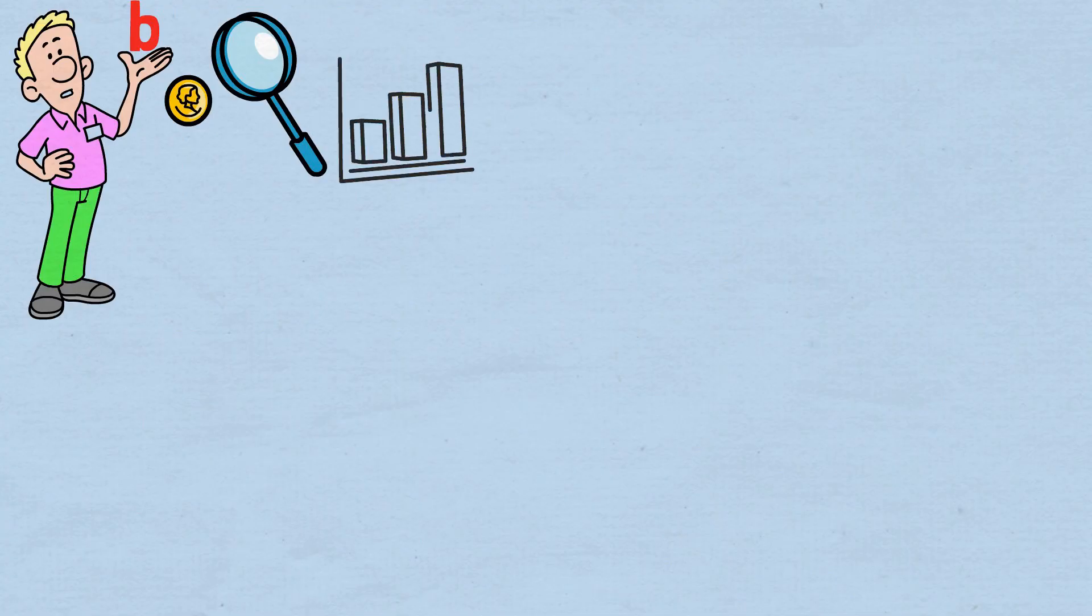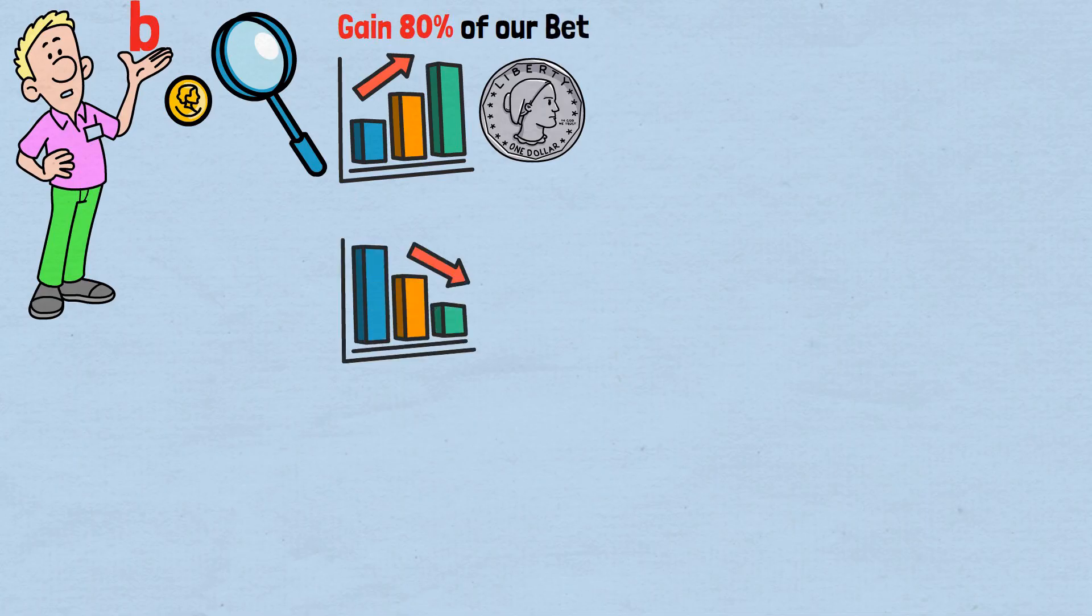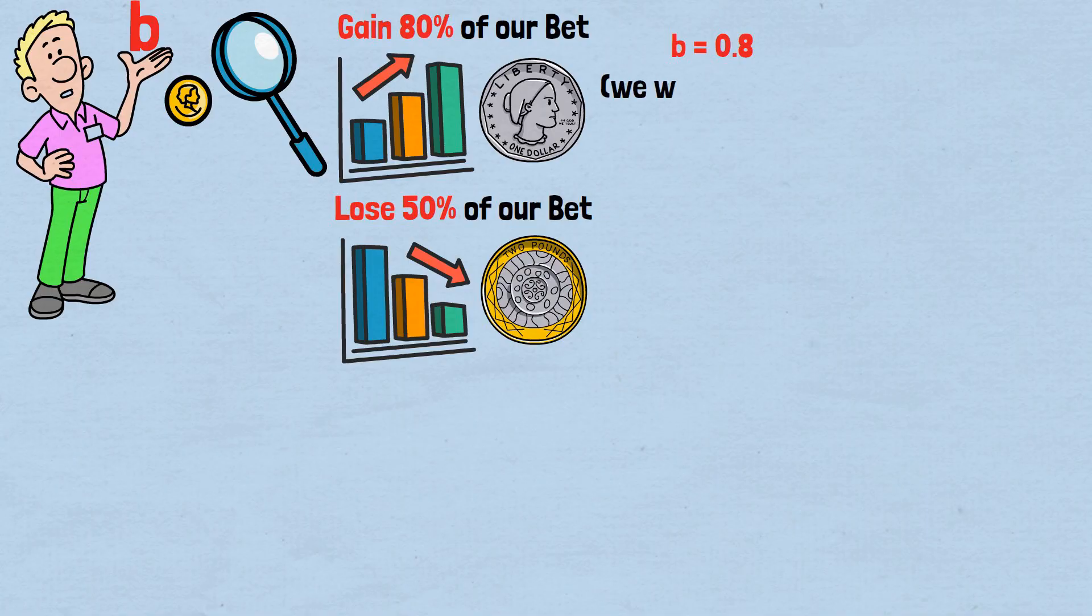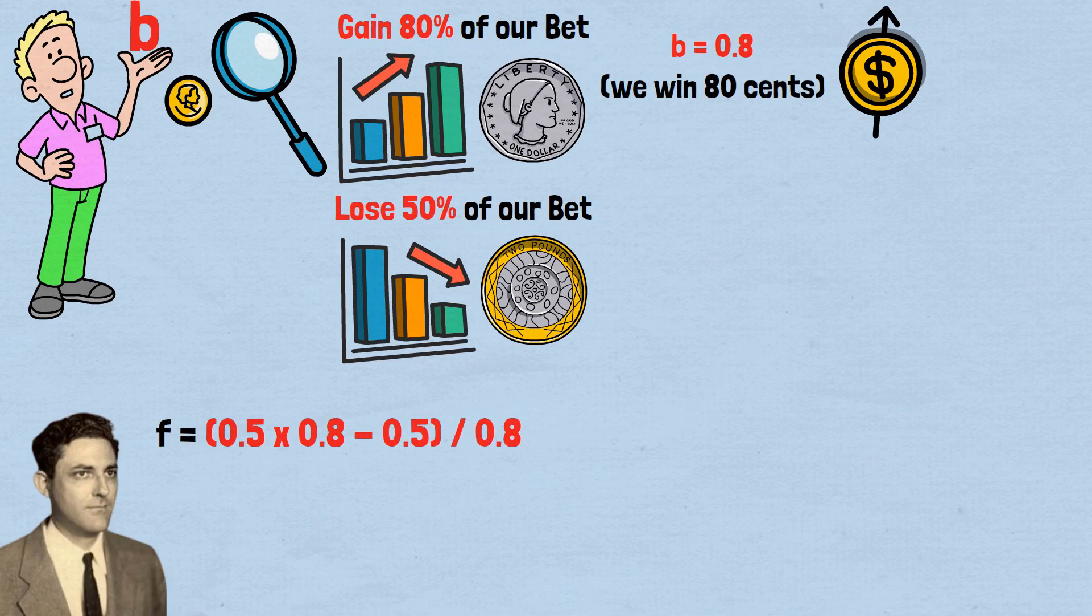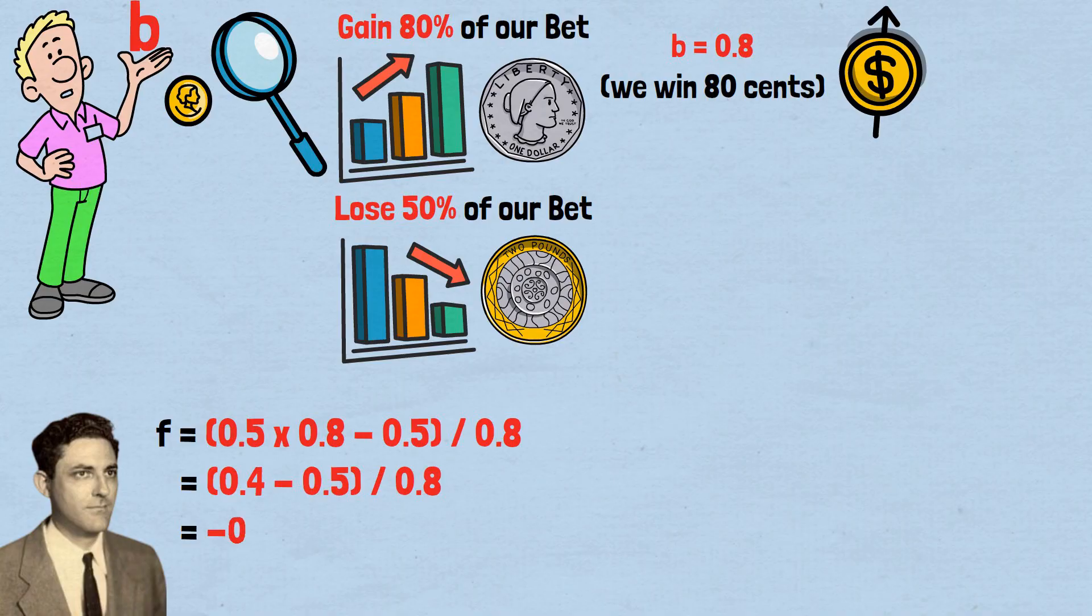In our coin game, when we win heads, we gain 80% of our bet. When we lose tails, we lose 50% of our bet. So B equals 0.8, we win 80 cents for every dollar bet. Plugging into Kelly's formula, F equals 0.5 times B 0.8 minus 0.5 divided by 0.8 equals 0.4 minus 0.5 divided by 0.8 equals negative 0.1 divided by 0.8 equals negative 0.125.